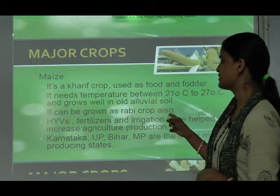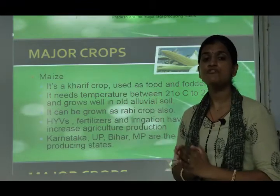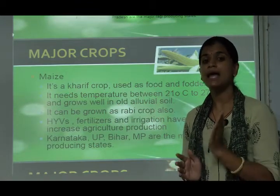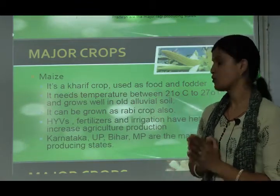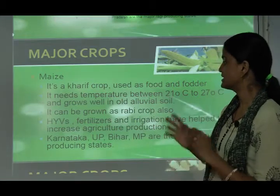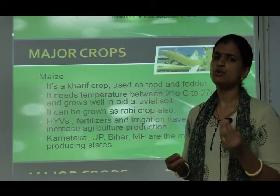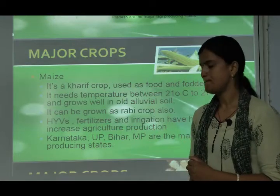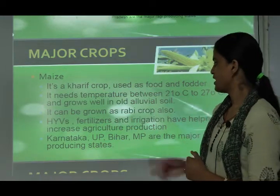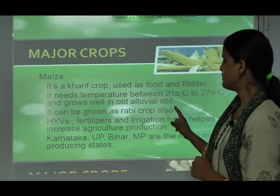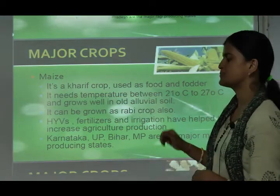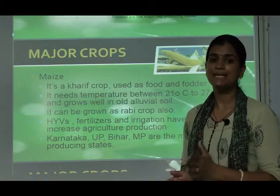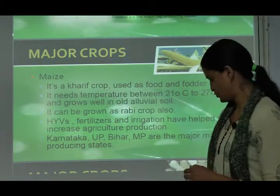High Yielding Variety (HYV) seeds, fertilizers, and new irrigation systems have helped increase maize production. Karnataka, Uttar Pradesh, Bihar, and Madhya Pradesh are the major maize-producing states.